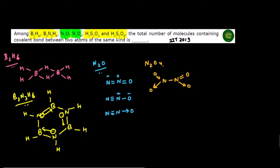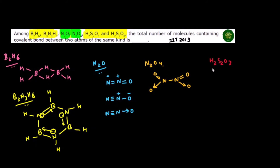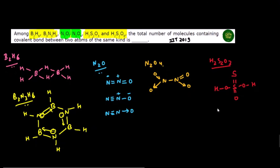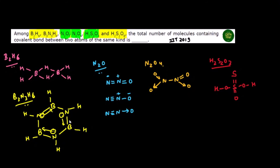Let's look at H2S2O3. If you don't remember its structure, take the structure of H2SO4 and replace one oxygen with sulfur. That gives you the structure of H2S2O3. Here also a sulfur-sulfur bond is formed between same elements — so this is also included in our answer.